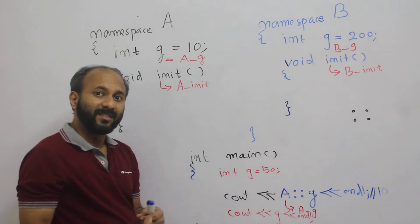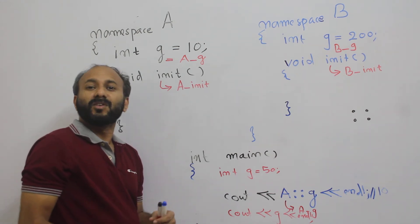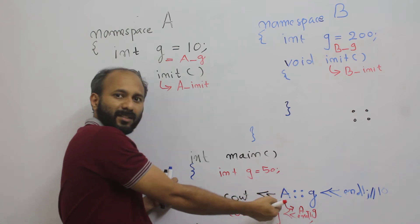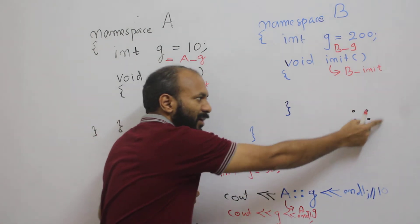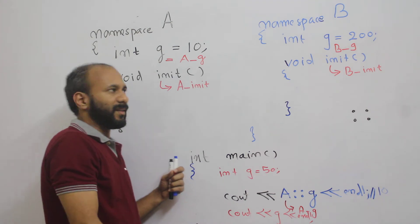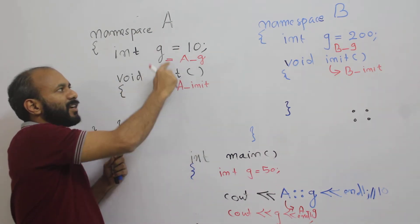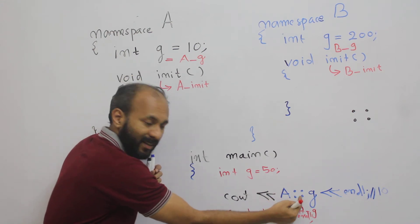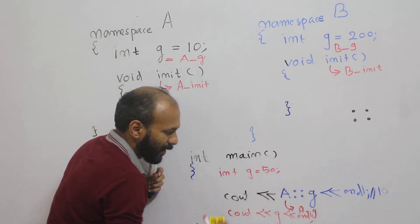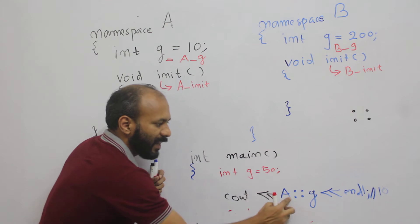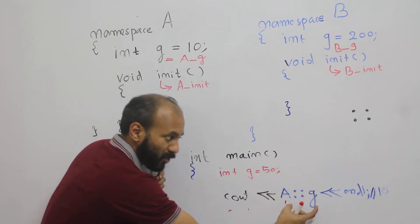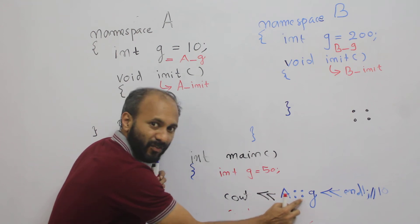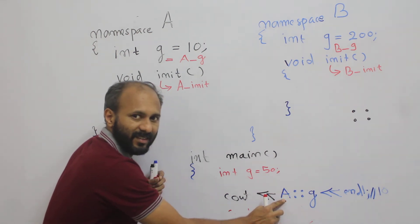Recollect what is name mangling. If you are able to recollect the concept of name mangling, you can access the namespace elements simply by using a scope resolution operator. The compiler is renaming this variable as A_g. So with the help of the scope resolution operator, you can directly access the content of namespace A.